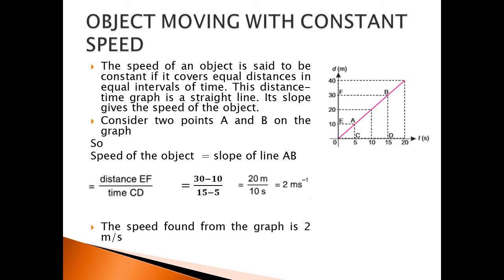Distance EF is the distance covered by the object and time CD is the time taken. At point F the distance is 30 meters and at point E it is 10 meters, so the difference is 30 minus 10. For time, at point D it is 15 seconds and at point C it is 5 seconds, so it is 15 minus 5. After calculating, the speed of the object is 20 over 10, which equals 2 meters per second.